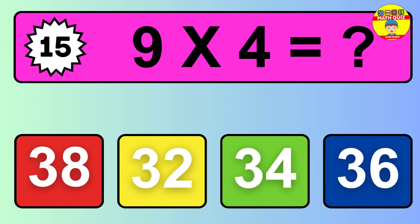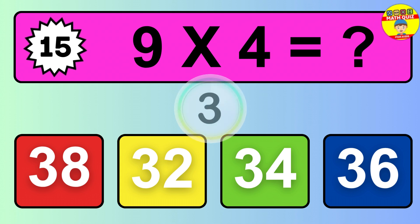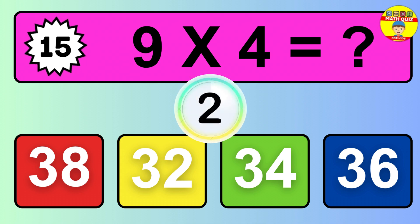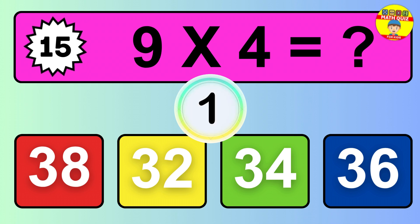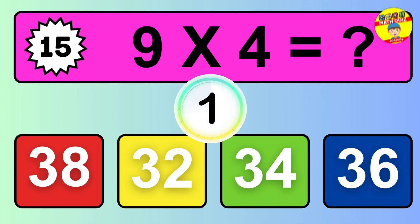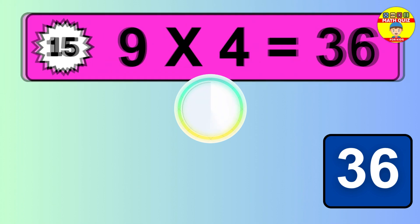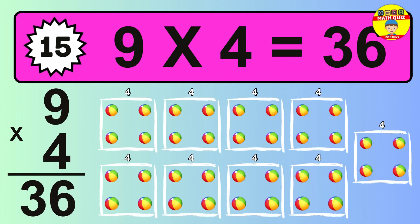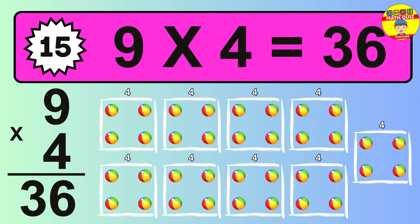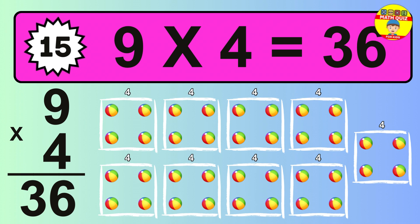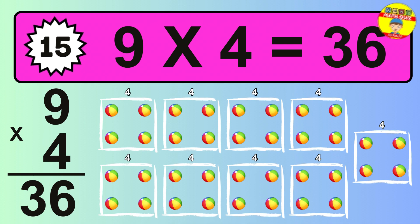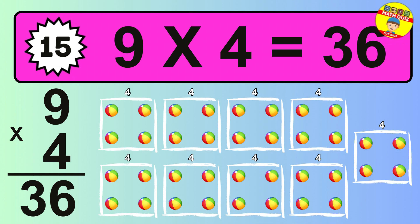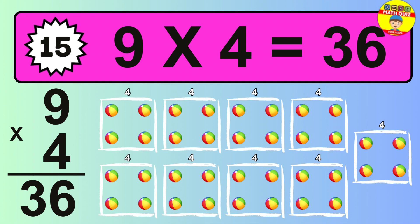Question 15. Nine times four equals what? The answer is nine times four is thirty-six. To calculate, we have nine groups with four balls each one. So how many balls do we have? Thirty-six balls.